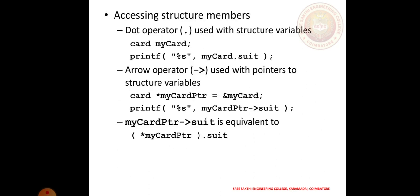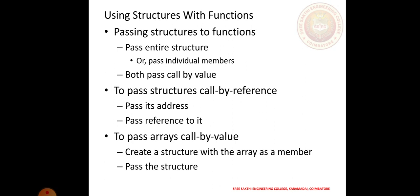To access struct members, the dot operator is used with struct variables. For example: printf("%s", myCard.suit). The arrow operator (->) is used with a pointer to a struct variable. For example: struct card *myCardPtr = &myCard; printf("%s", myCardPtr->suit). Using myCardPtr->suit is equivalent to myCard.suit. You can use either the dot operator or the arrow operator.